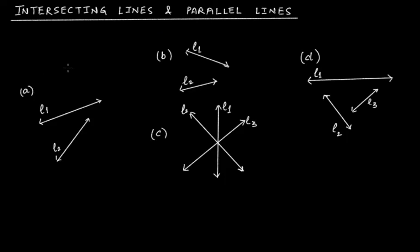Now look at these lines — we have diagrams A, B, C, and D. In diagram A, you have L1 and L2. You can clearly see that the distance between these two lines at this position is this much, at this position it's this much, and as you move further in this direction the distance between these two lines is decreasing. If you extend these lines, they will finally intersect at a certain position.